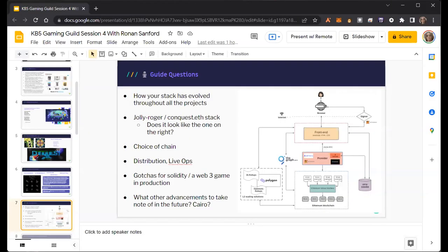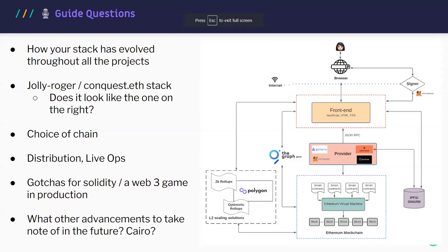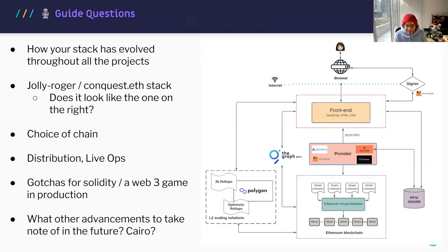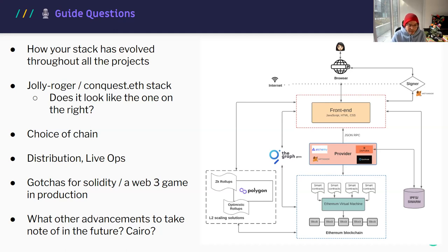Closing: the host notes that Unity has trade-offs — over 90% of game developers use it, but it's not optimized for web3 development. Wallet connections in Unity aren't very elegant. Jolly Roger, by contrast, is built on the modern web and handles these concerns natively. The host thanks Ronan for his time, and Ronan invites anyone building something to reach out — via Telegram or Discord — as he's always interested to see what people are building and happy to help.